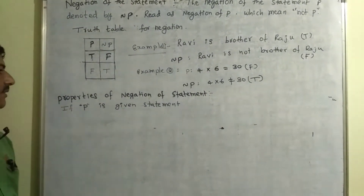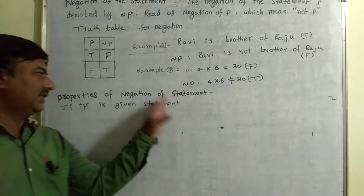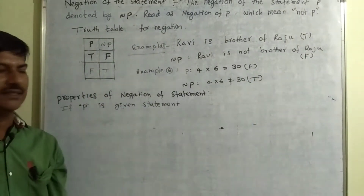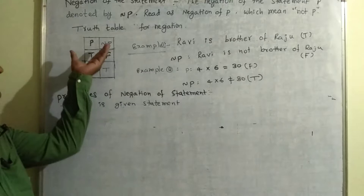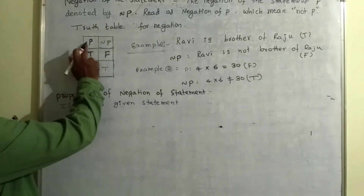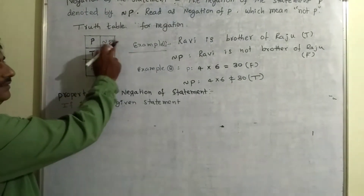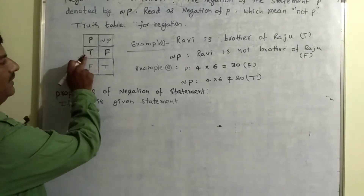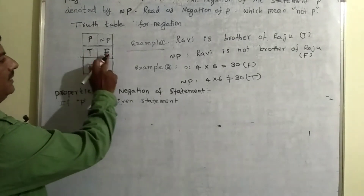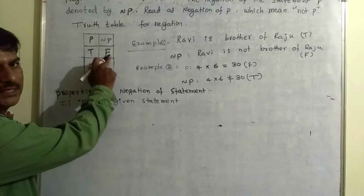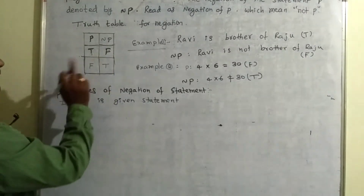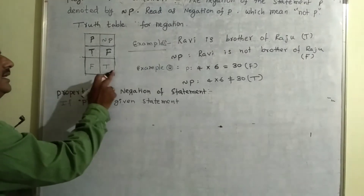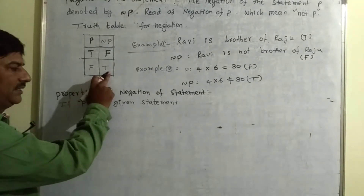Now let us discuss the properties of negation. First, we look at the truth table for P and negation of P. If P is a true statement, then negation of P is a false statement. And if P is a false statement, then negation of P is a true statement.